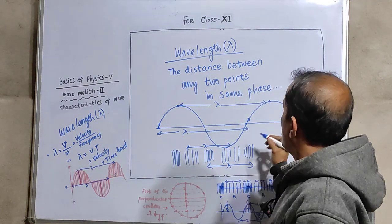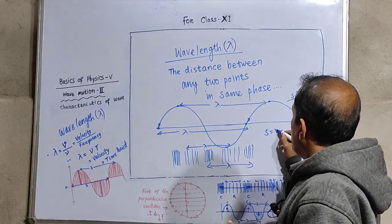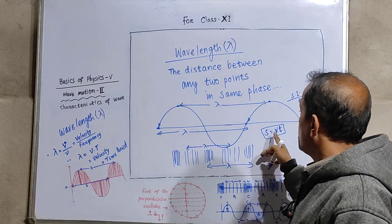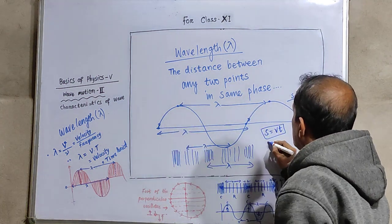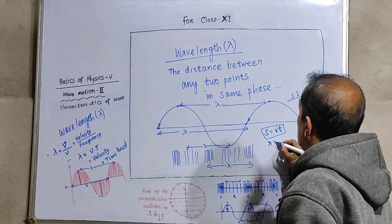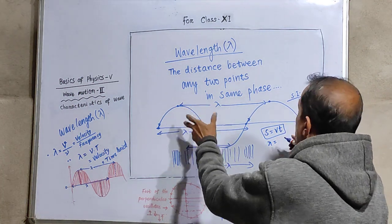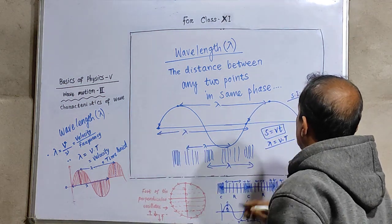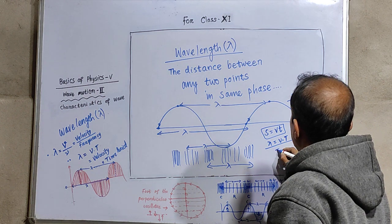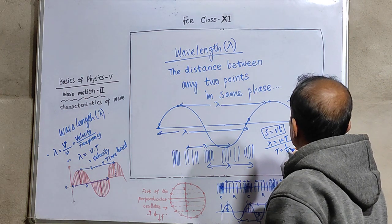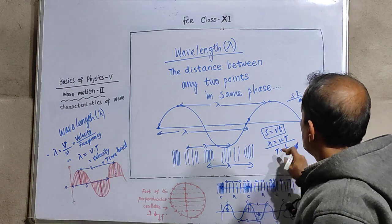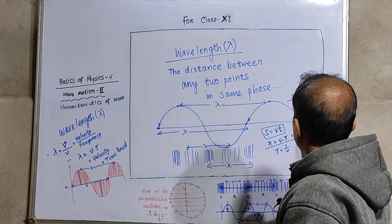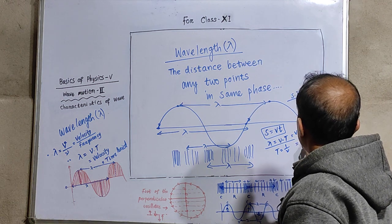As it is a distance, we know that s equals vt is a general formula which we have studied in class 9. Distance equals speed into time. So if this is the distance lambda, then it should be the product of the speed of the wave v into the time it is taking t. So lambda will be vt. As we know, time period T equals 1 by nu. Time period is reciprocal of frequency. So if we replace t, we can write v into 1 by nu, so this equals v by nu.